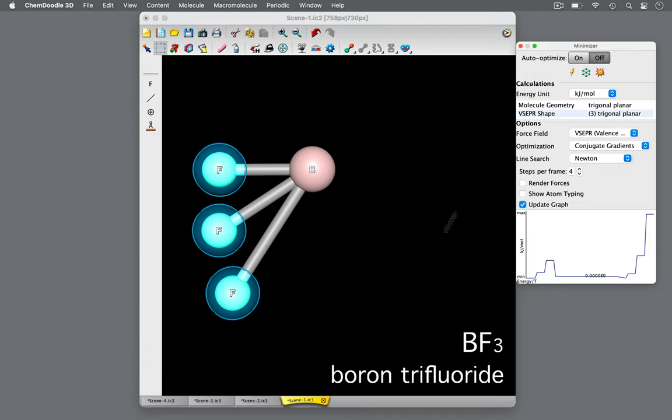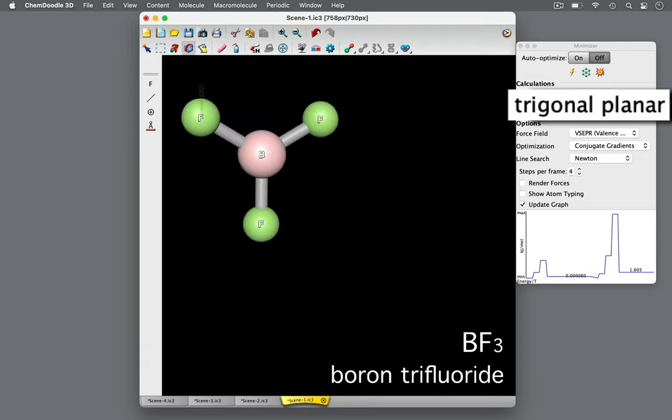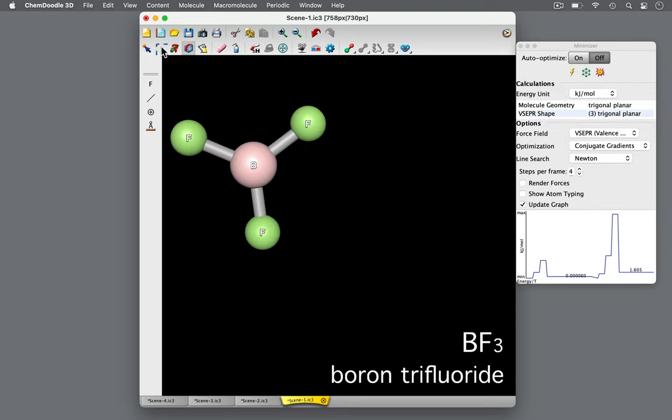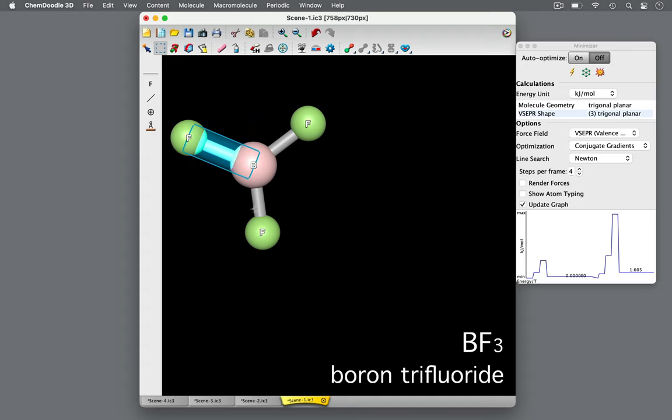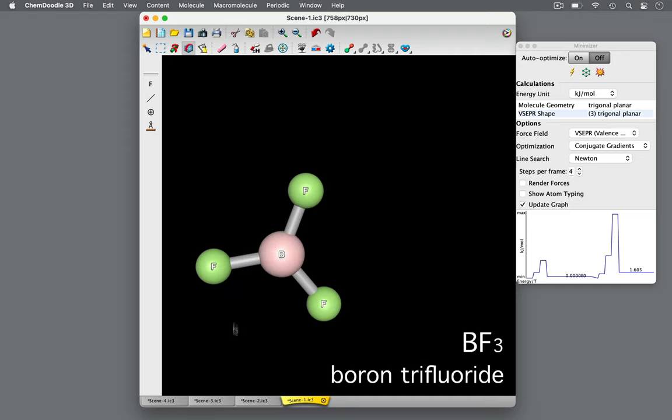In order to minimize electrostatic repulsions, boron trifluoride arranges into a trigonal planar geometry. Note the prefix tri for three. There are three domains of electron density from the three single bonds. Planar indicates that these atoms and domains are all in a single flat plane.